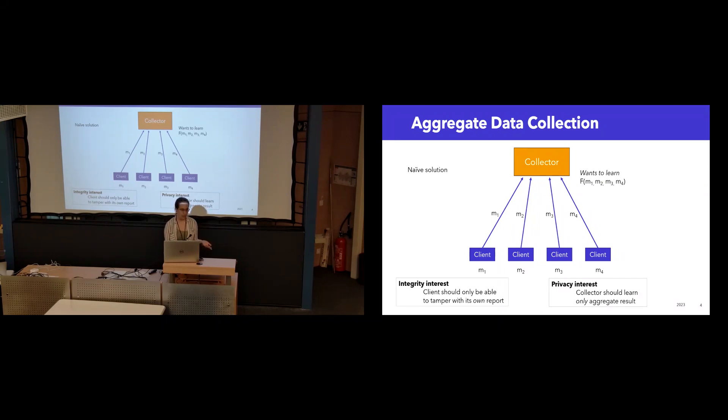The solution satisfies one of the two properties that we would want. It has integrity, which means the clients can't perform data poisoning. If their measurements are invalid or badly formatted, the collector will be able to tell and discard them. However, the solution lacks privacy because the collector is learning a lot more than it needs to.